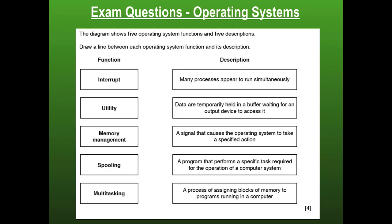This diagram shows five operating system functions and five descriptions — let's see how we do. Approach: go through and find the ones you feel confident about. We mentioned interrupt earlier — that's a signal which causes the operating system to take a specified action. Next we have utility — a utility program is a set task to be performed. Memory management involves assigning memory to the computer. Spooling is when we temporarily hold data in the buffer. And multitasking is the appearance of running many things simultaneously — instructions happen in order but very quickly, appearing simultaneous for the user.